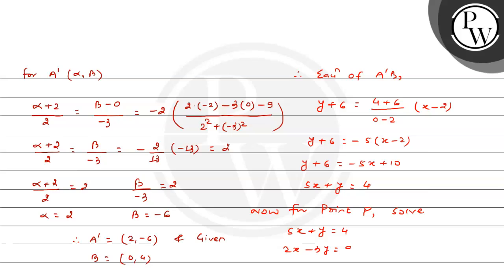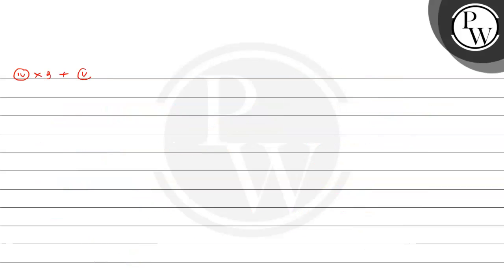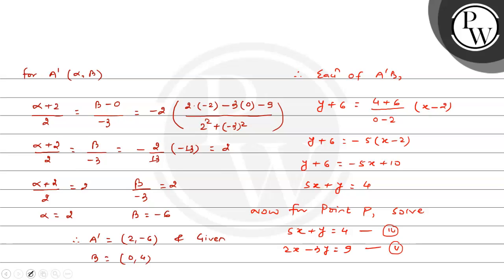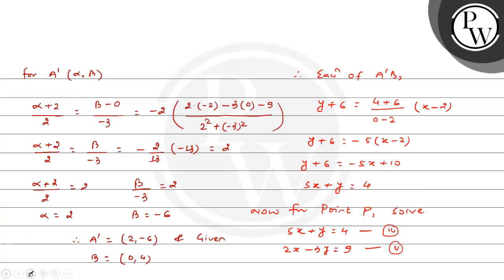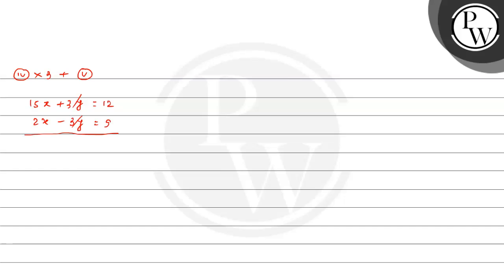For point P, solve simultaneously: equation of A'B: 5x + y = 4, and the given line: 2x - 3y = 9. Multiply the first equation by 3: 15x + 3y = 12, then add to the second: 2x - 3y = 9. Adding gives 17x = 21, so x = 21/17.